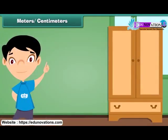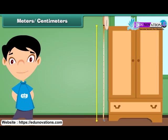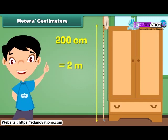We can measure the height of the almira by using measuring tape. The height of the almira is 200 centimeters. Therefore, we can say that the height of the almira is 2 meters.